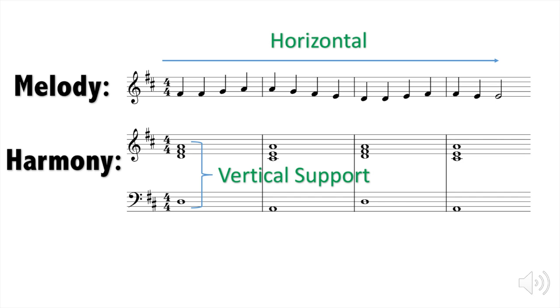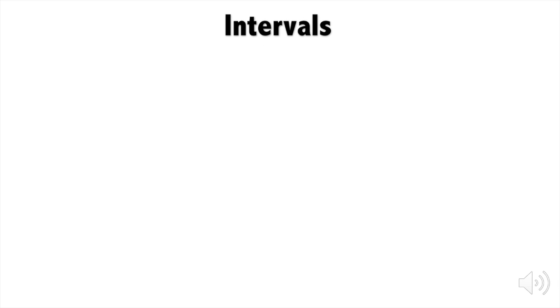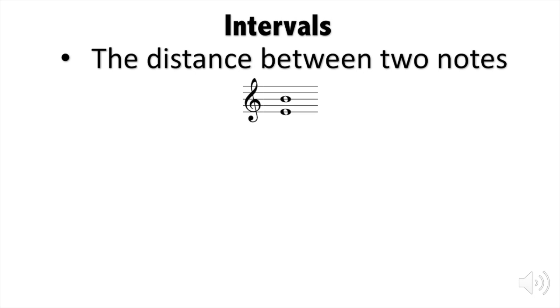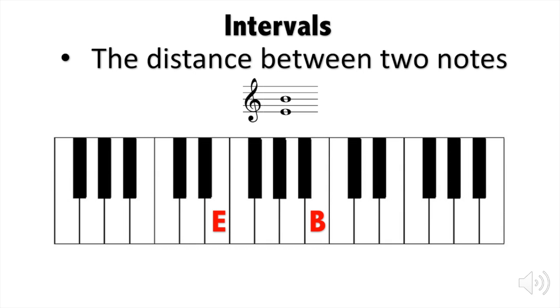And all of these chords and harmony begin with one single concept: intervals. An interval is the distance between two notes. For example, here I have an E and here I have a B. If I put these two notes on a keyboard and count the distance between them, I can conclude that the distance between E and B is seven semitones. Which means that the interval between these two notes is seven semitones.